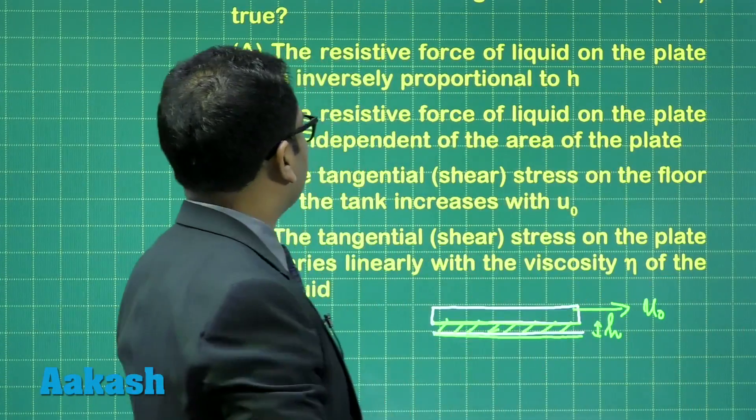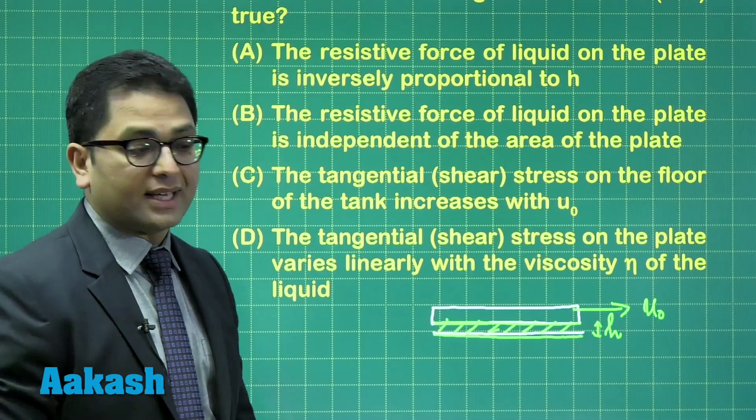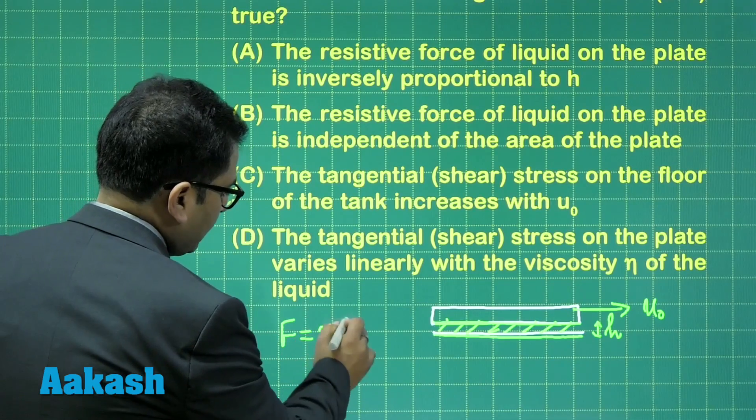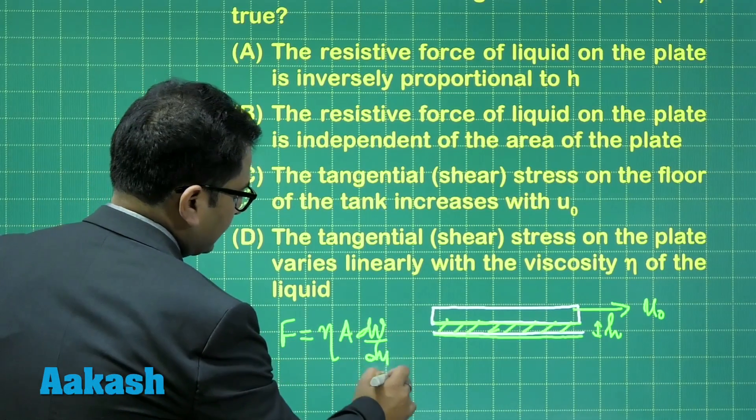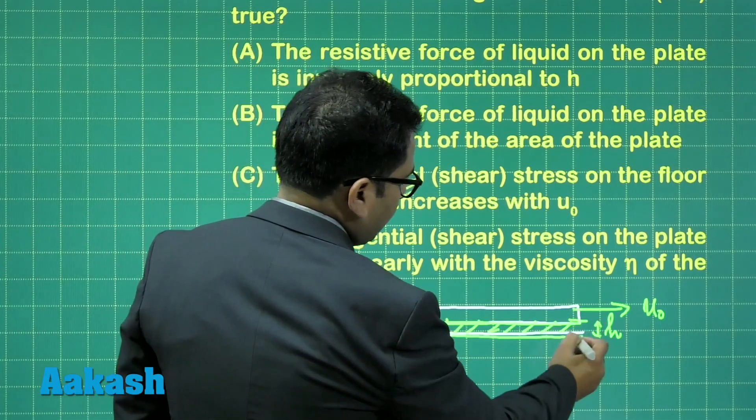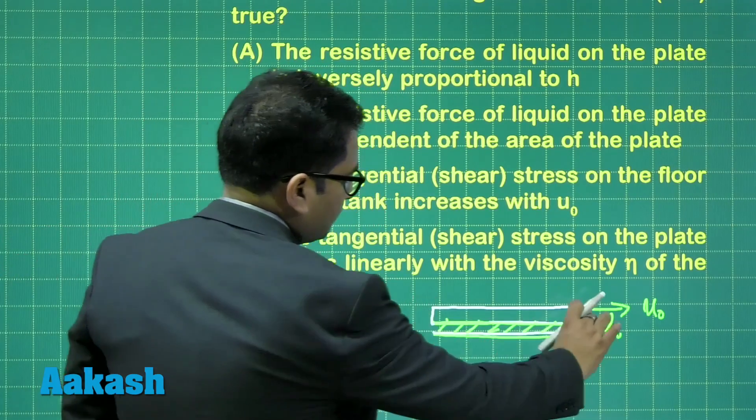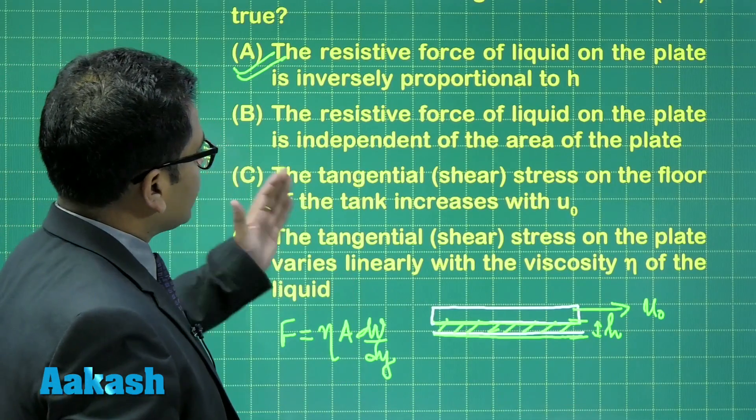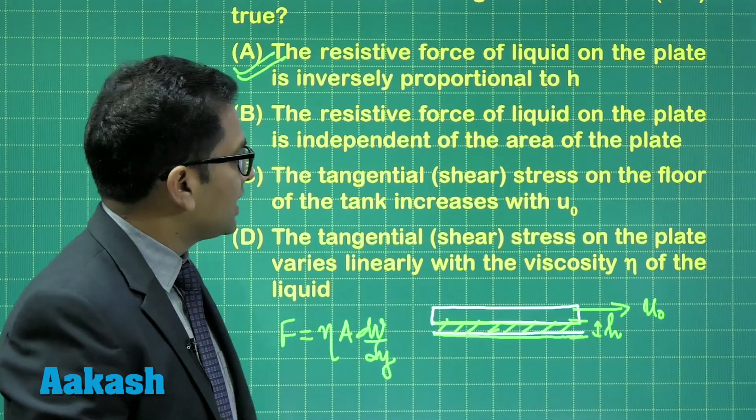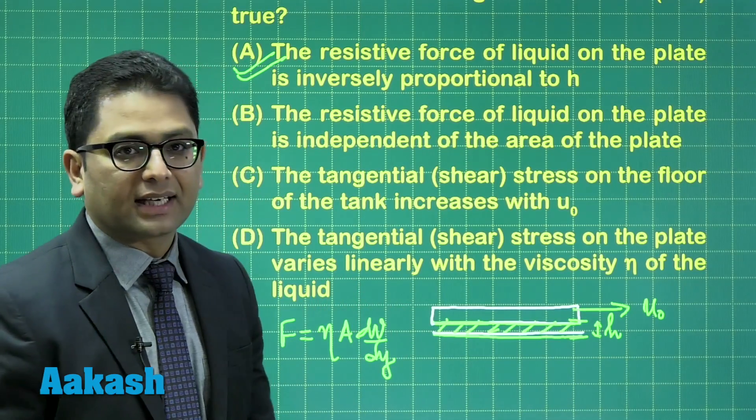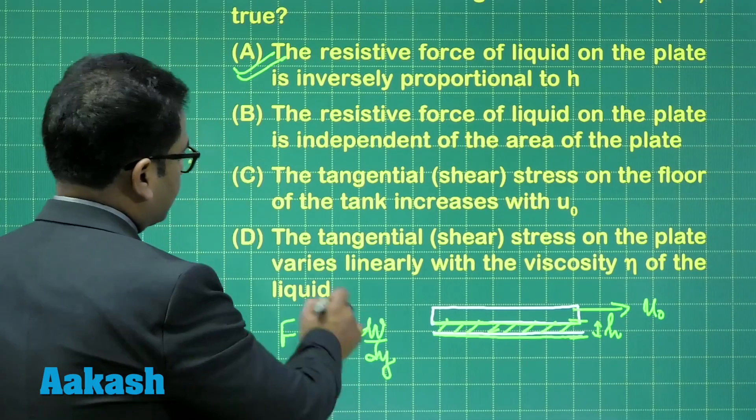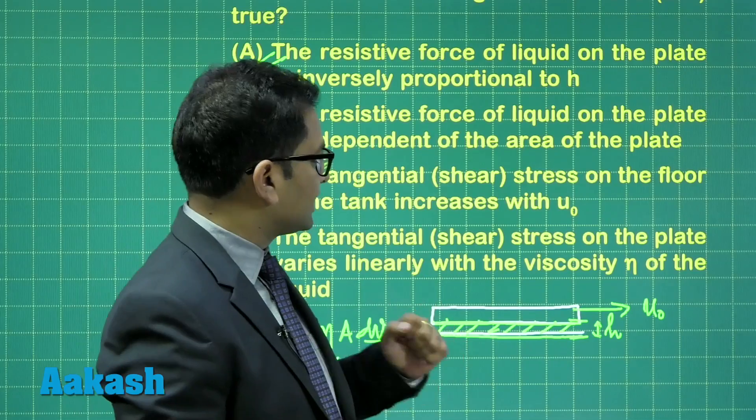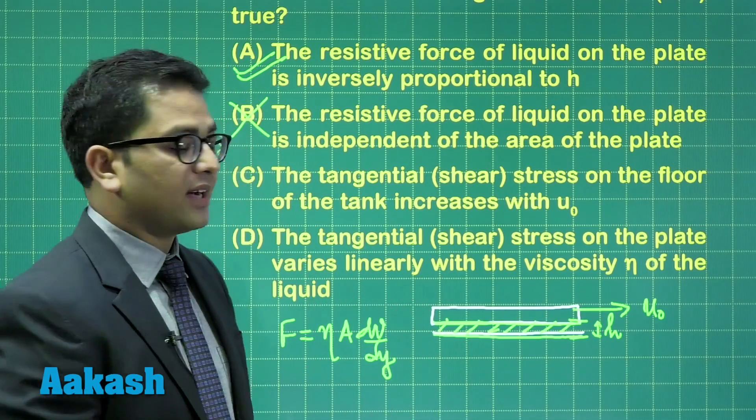So let's see. The resistive force of the liquid on the plate is inversely proportional to h. I think that's fine. Because F is ηA dV/dY. And this dV will be V₀ minus zero. And this dY would be h. So therefore, option number A stands correct. Resistive force of the liquid on the plate is independent of the area of the plate. Oh, that's not correct. Because the resistive force depends on the area.